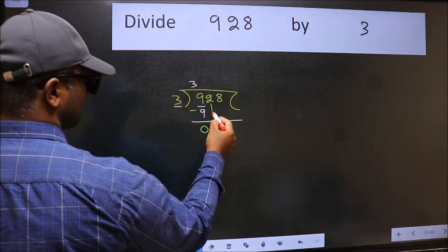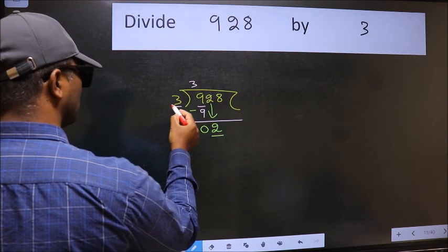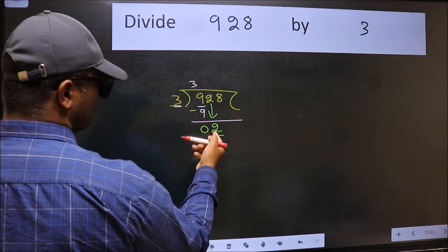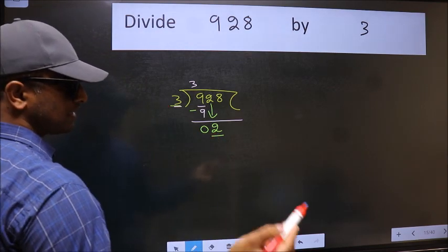After this, bring down the beside number. So 2 down. Now here we have 2 and here 3. 2 is smaller than 3, so we should bring down the second number.